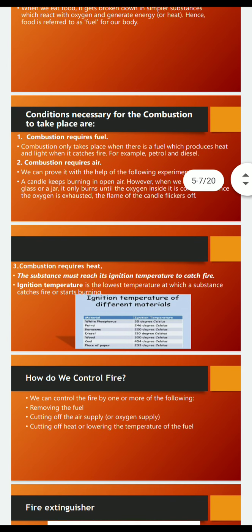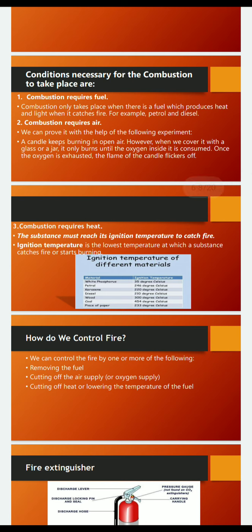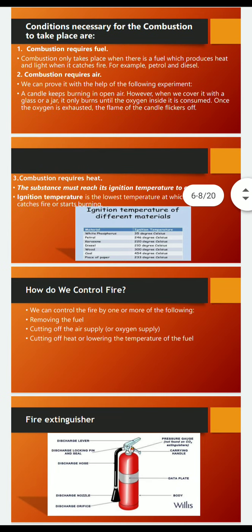Now, how do we control fire? We can control fire by using water, by using carbon dioxide as a fire extinguisher, or by cutting off the supply of fuel or air. The methods are: removing the fuel, cutting off the air or oxygen supply, or lowering the temperature of the fuel below its ignition temperature.